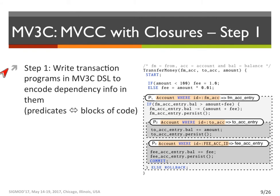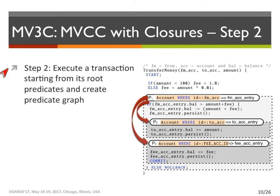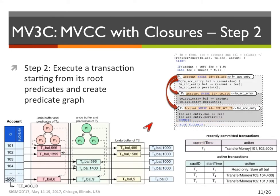Now that we have encoded the dependency information inside the program, it's ready for execution. During the execution, the predicates are gathered. In addition, we also gather the relationship between predicates in the form of a DAG. For example, after running an instance of the transfer money program, a predicate graph with three nodes is created. Here is a snapshot of the execution of several transaction programs. Here we have T3, which is an instance of the transfer money program that is already committed, and two other transactions, TY and TZ, that started after T3 and are running concurrently. We can see the predicate graph for the running transactions TY and TZ, and the undo buffer for all transactions.